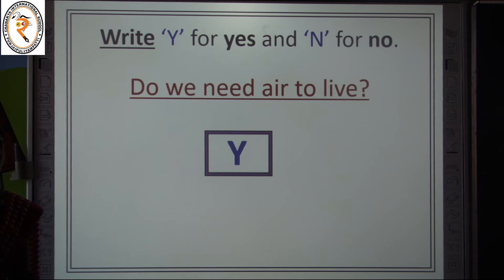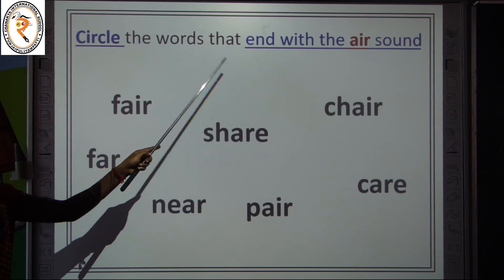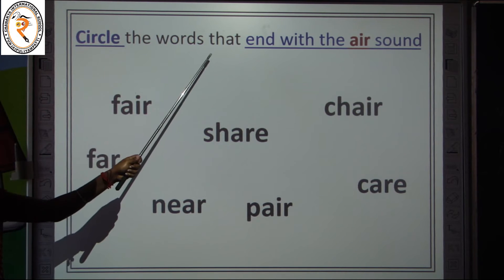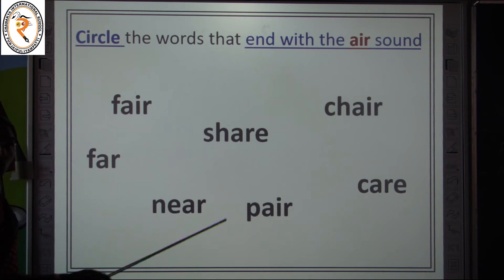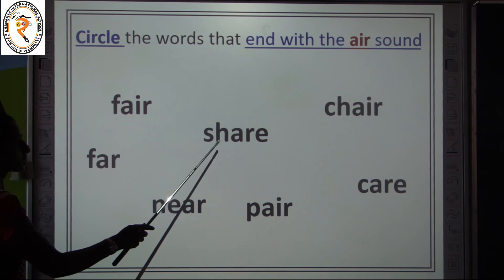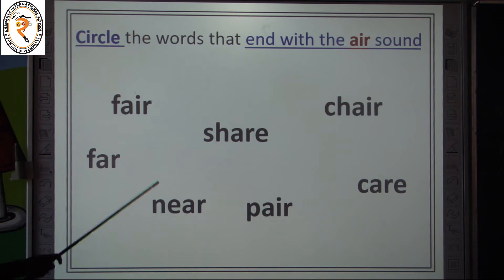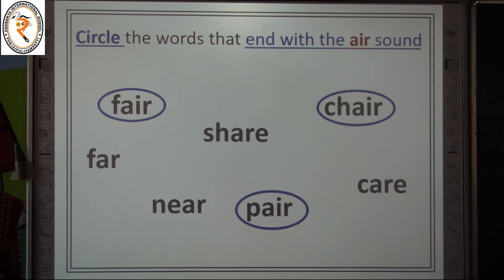Now a refreshing game: circle the words that end with the R sound. The words given are: far, fall, near, share, path, can. The words that end with the R sound are: far, near, share.